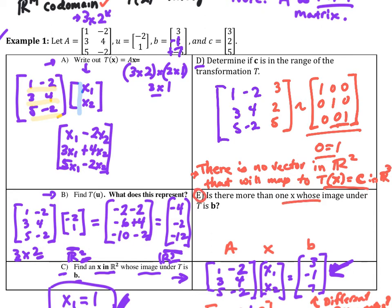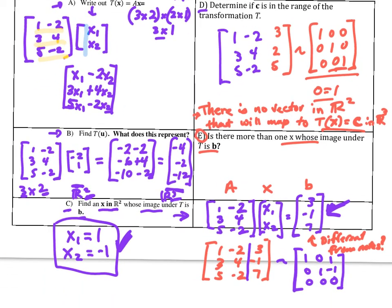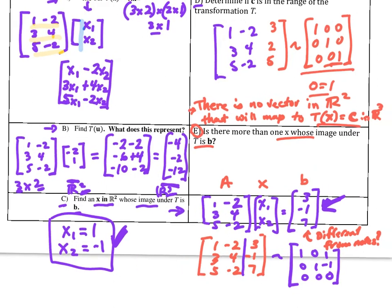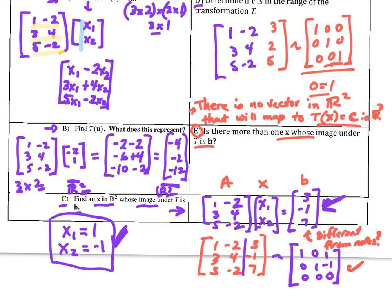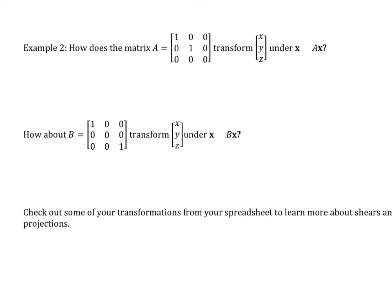I did this out of order. I should have done E first. But is there more than one x whose image under T is b? Going back down here at the bottom, is there more than one that would work? Well, we only get a unique solution down here. And that unique solution tells me, no, there are no others. So we just have a unique solution here. Because we found just that one here.